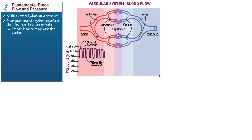Blood pressure drops in the arterioles and gradually decreases until it reaches 0 mmHg in the veins. At 0 mmHg, the veins lack the pressure necessary to return blood to the heart.